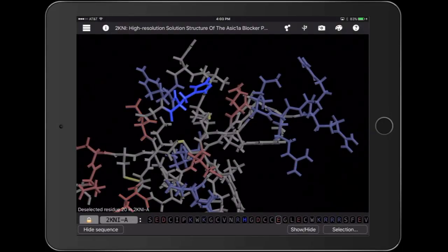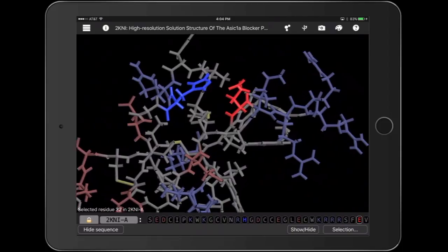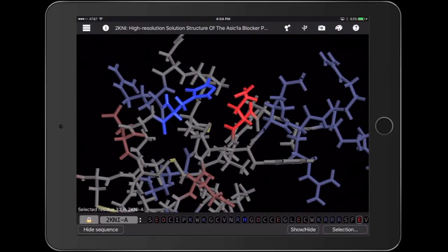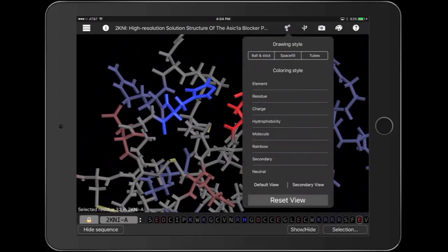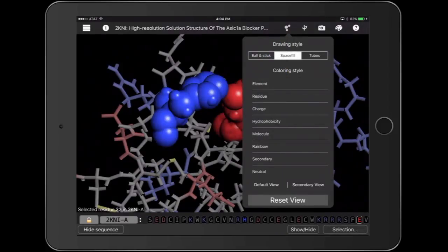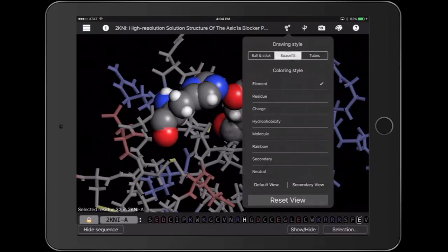Now that I've found the amino acids that might be interacting, I'm going to look at these a little bit closer. I want to confirm that the residues that would be charged, the atoms that would be charged, are actually near each other. So I change the drawing style to space fill, and I change the coloring style to element, and I hide everything else so I can look at these really close.